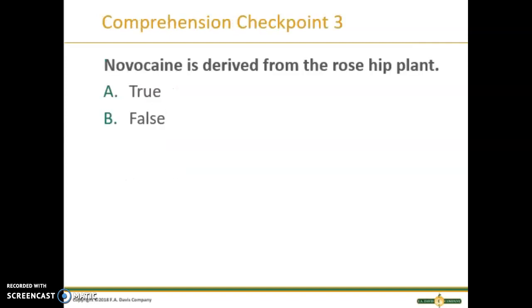True or false: Novocaine is derived from the rose hip plant. If you said false, you are correct — it is derived from the coca plant.